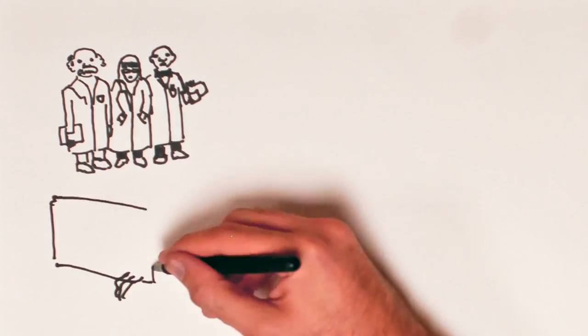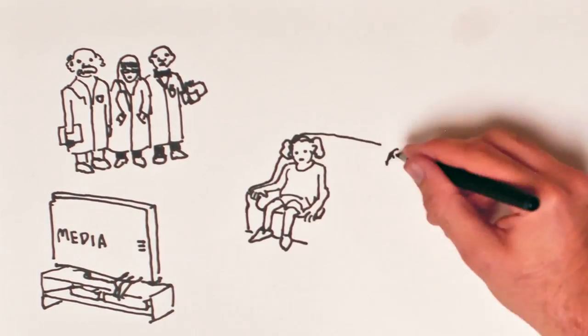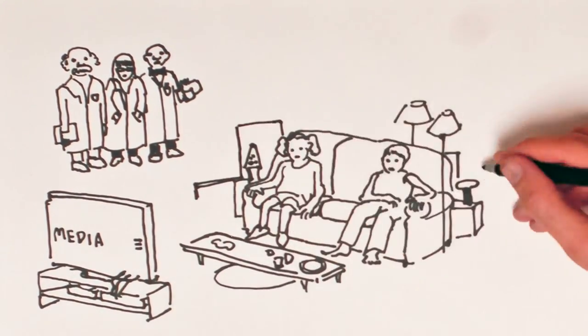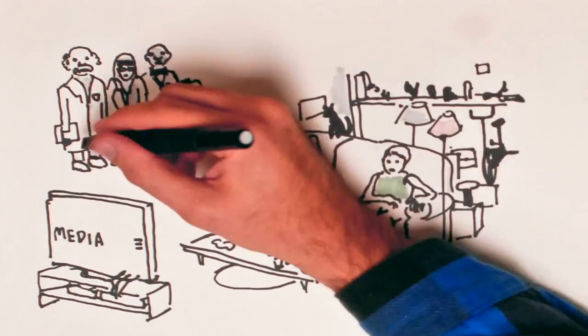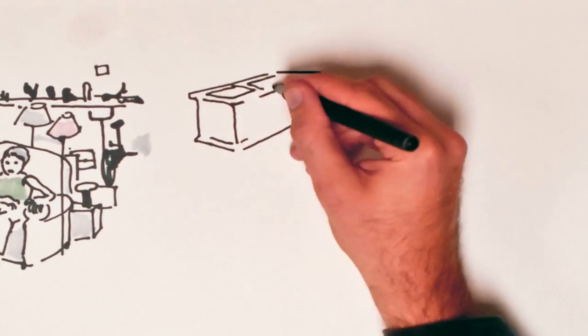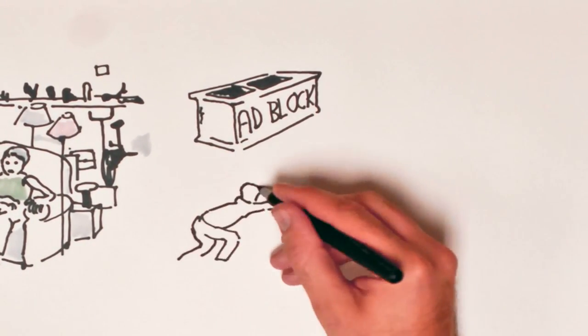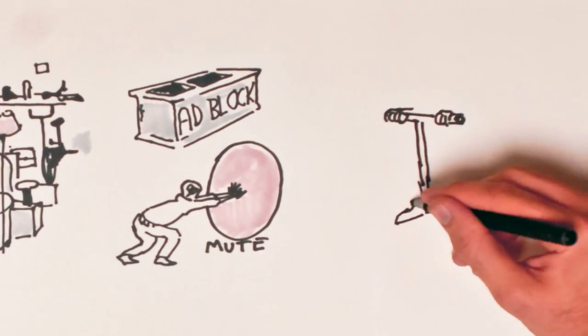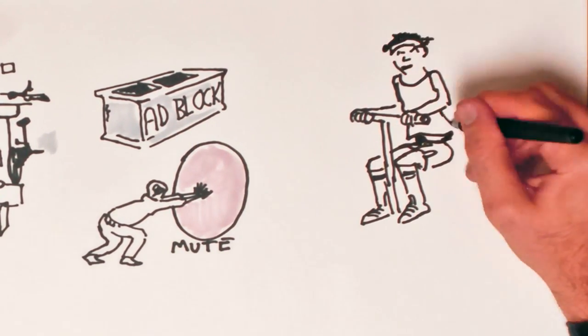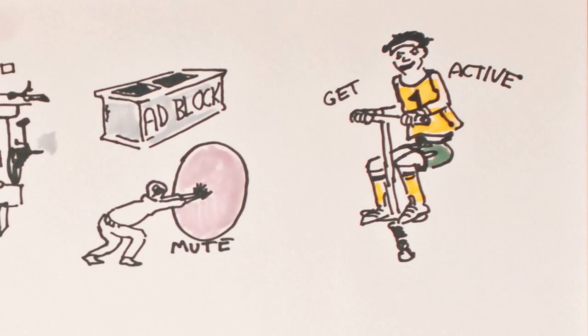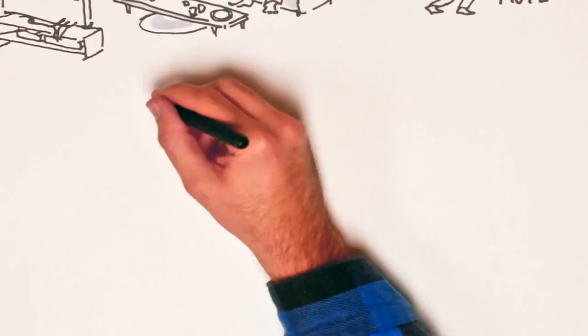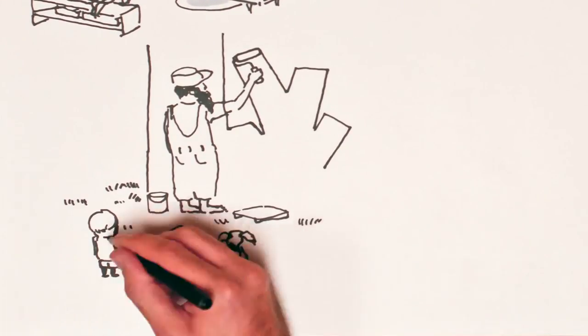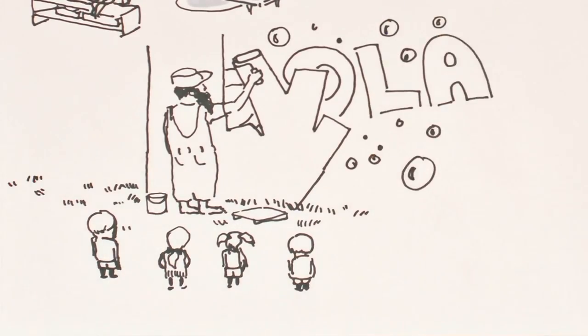Scientists also know that the more that people are exposed to the media, the more they prioritize materialistic values. A couple of ways to diminish the onslaught of consumer messages are to use ad block to hide ads on the internet or hit mute when commercials play on TV. But these steps can only take us so far. We also need to get active and start to remove advertising from public spaces and from our children's schools so that people aren't exposed to materialistic messages so often.